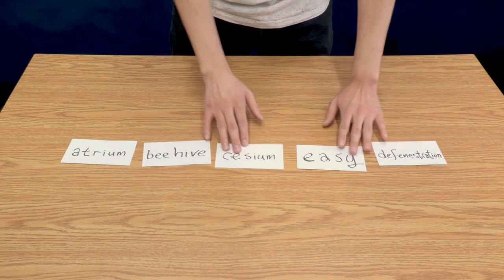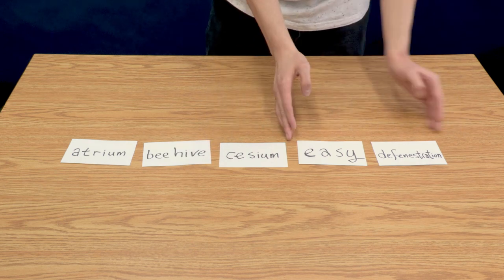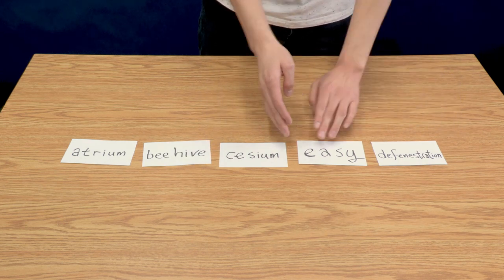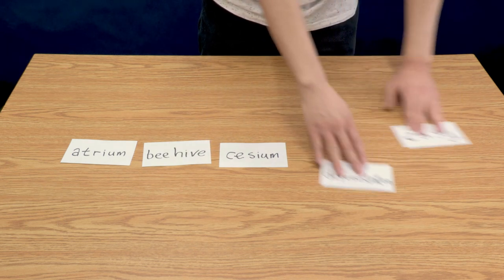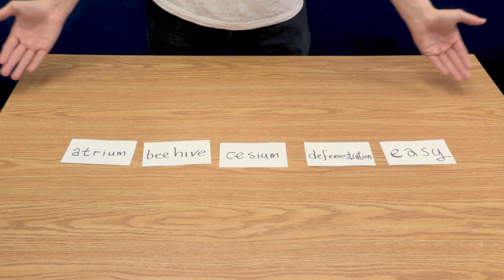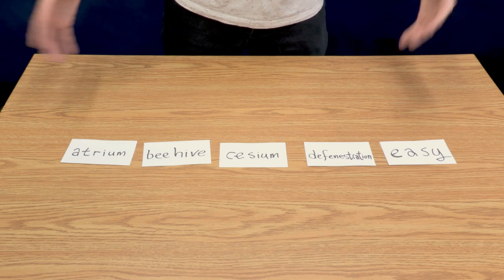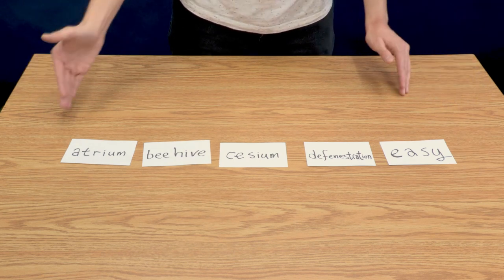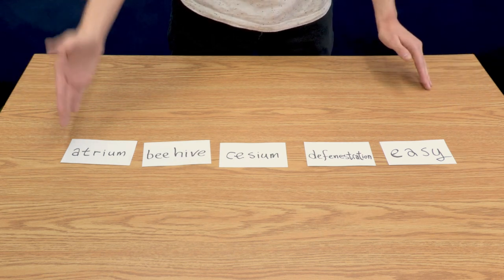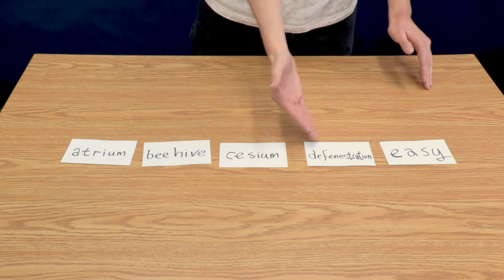Okay. And then cesium seems to be in the right place. Therefore, here we have easy and defenestration. D goes before E. So there we have it. We have the list sorted in ascending order. And what that means for words is that they're ordered in alphabetical order: A, B, C, D, and E.